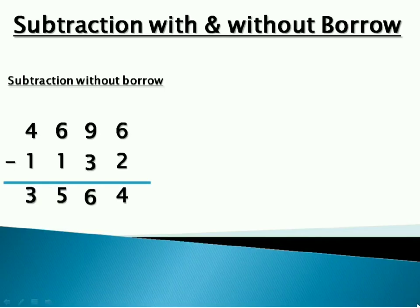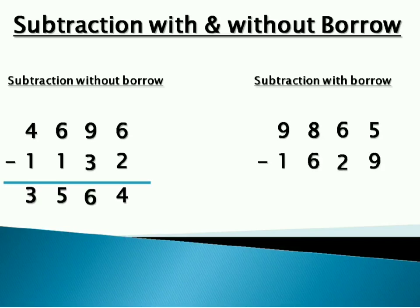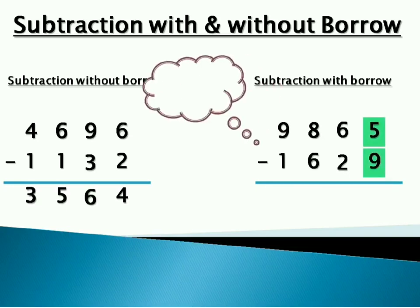So let's try subtraction with borrow. 9865 minus 1629. Let's start with the units place. 5 minus 9, here it's not possible. Let's borrow one from tens place. So 5 will become 15. And 15 minus 9 is 6.